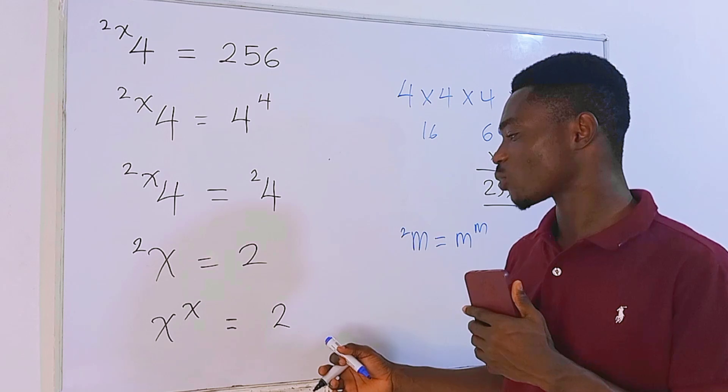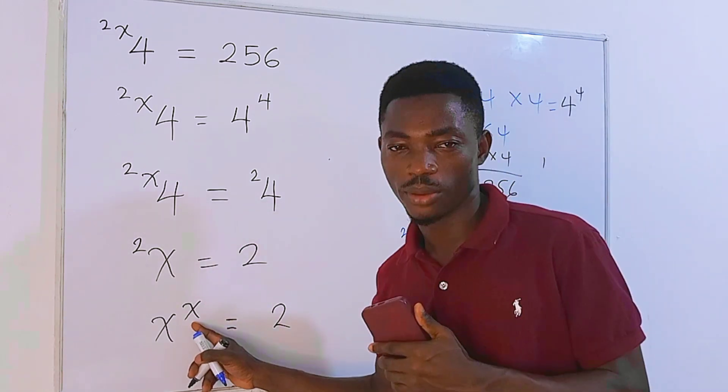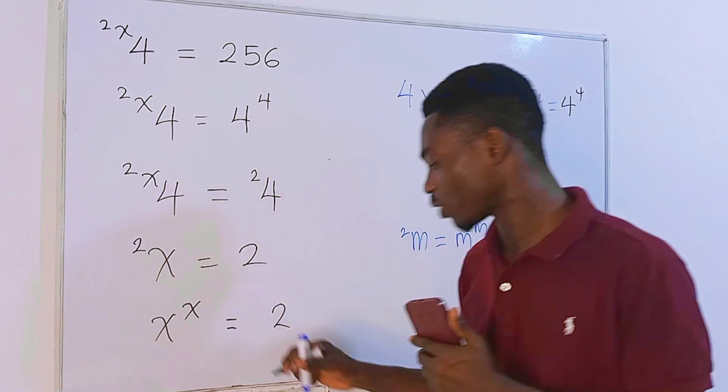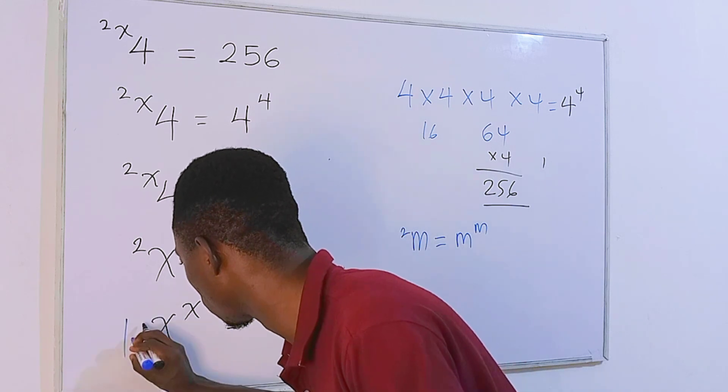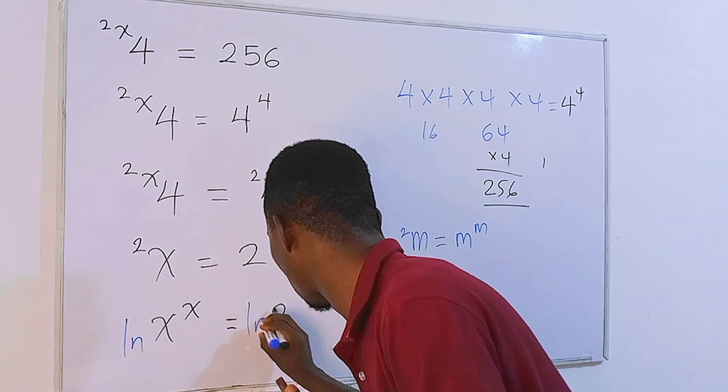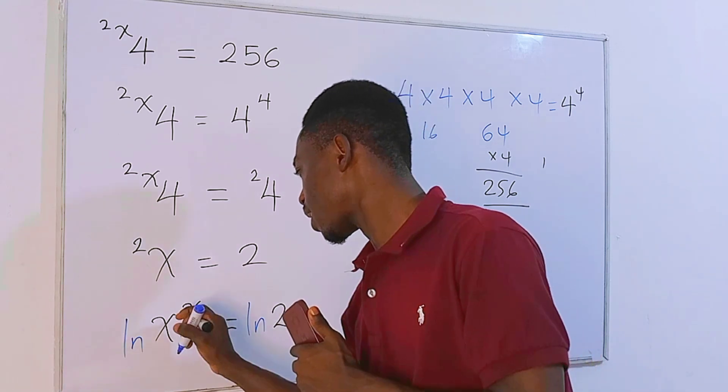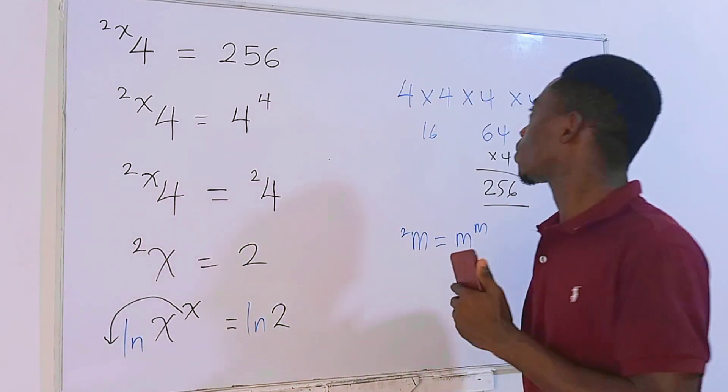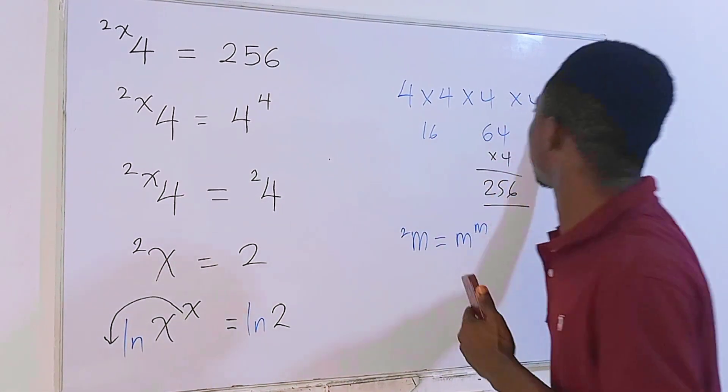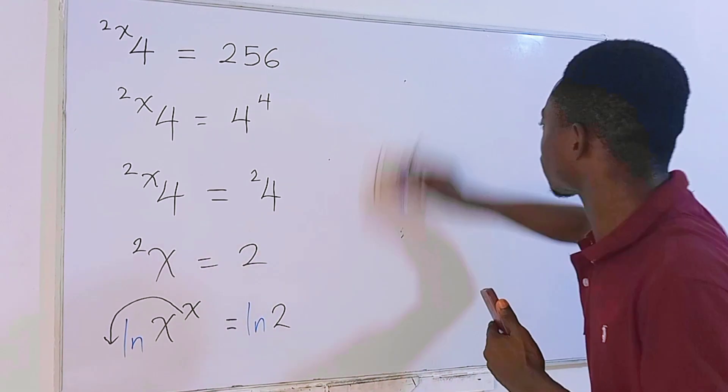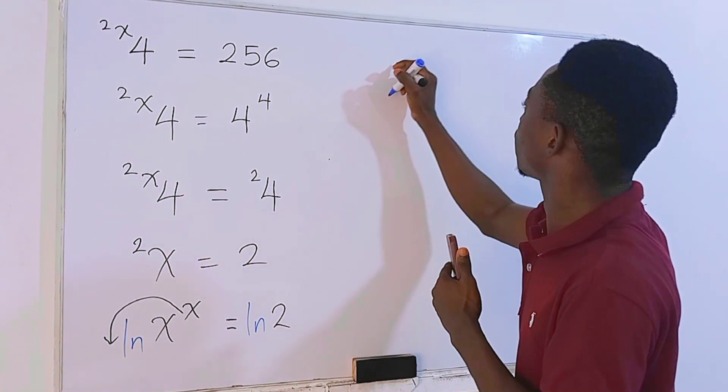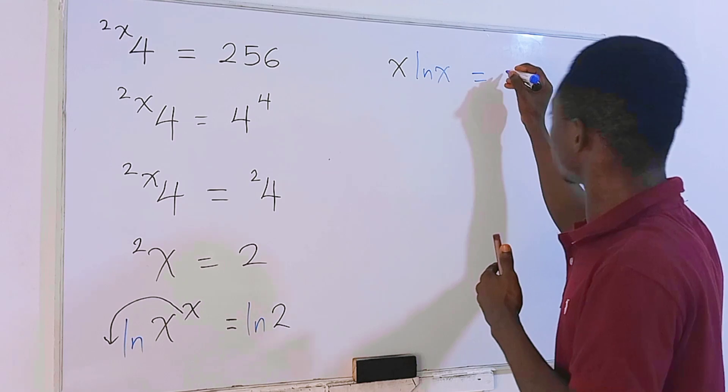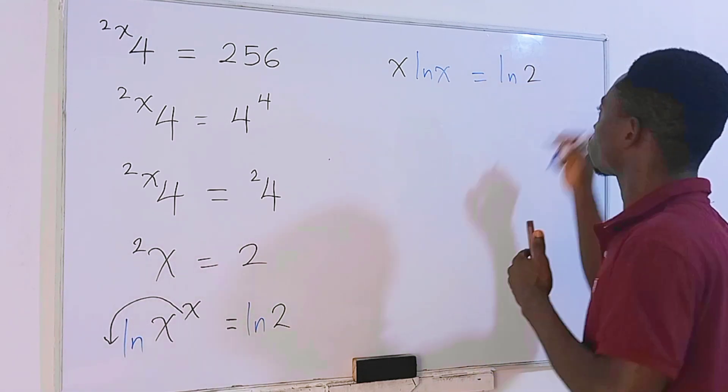Now to solve this one, first of all we need to drop this power right here down. And to drop this, it's either we take log or natural log. But I'm going for natural log because I prefer that one to log. So we take log on each side of the equation, and this power will move to the front. So we are going to have x ln of x equals ln of 2.